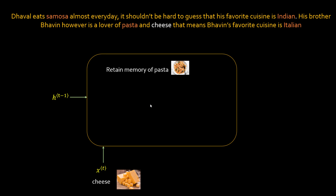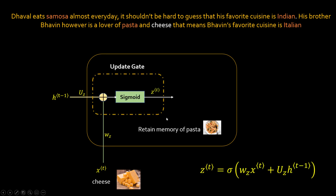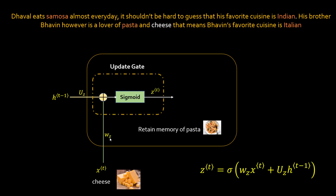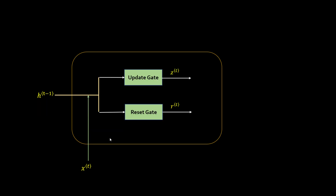When it comes to 'cheese,' you want to retain the memory of 'pasta,' and the same applies to the word 'and.' That is done by the update gate. The update gate works exactly the same as the reset gate but with different weights. Previously you had W(R); here you have W(Z). The mathematical equation is still the same: a weighted sum of X(t), W(Z), H(t-1), U(Z), with a sigmoid activation applied. The value Z(t) that you get is the value of your update gate.